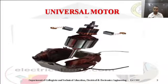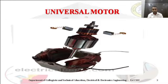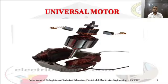This is a picture of a universal motor. In this picture we can see each and every part of a universal motor — the stator and the rotor. Here the field winding is the stator winding. The armature is the rotor. The brush, the commutator, the shaft — everything has been clearly shown in this universal motor.